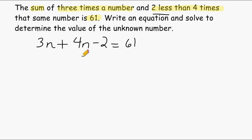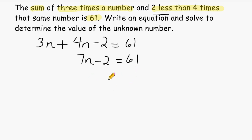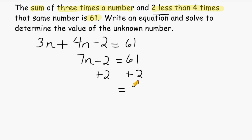Now we have an equation that we can simplify and solve. We start by combining the terms 3n and 4n, which equals 7n. We bring down minus two equals sixty-one. Our goal is to isolate the variable n. When moving numbers across an equation, follow the order of operations in reverse — normally you add and subtract last and multiply and divide first, but when solving equations you work backwards. So we take care of addition or subtraction first. Because we have minus two, we do the opposite and add two to both sides, which leaves sixty-three on the right-hand side.